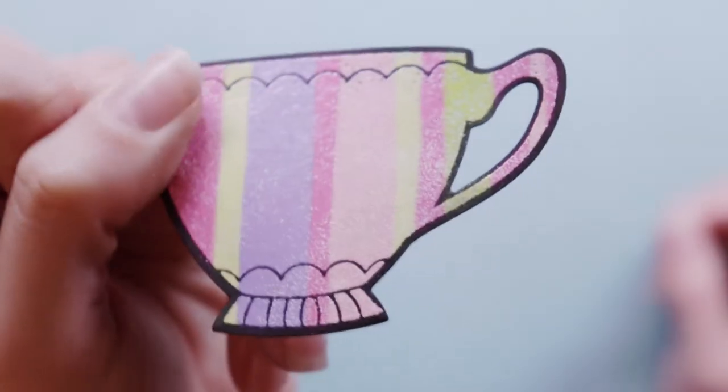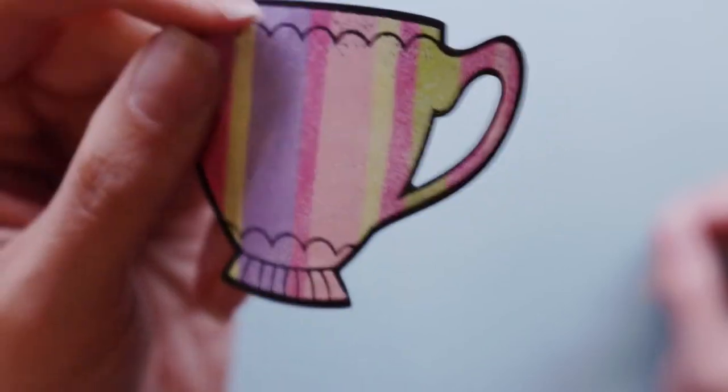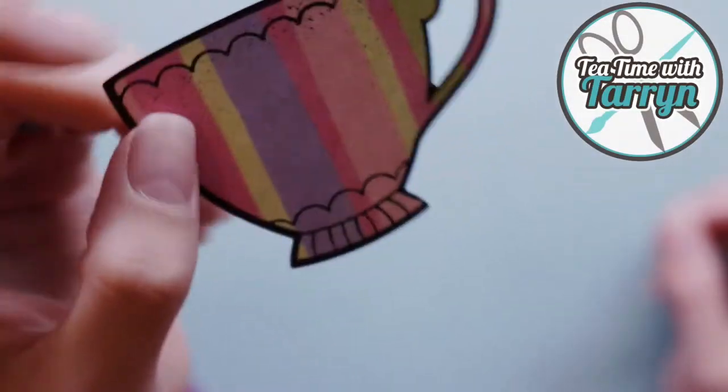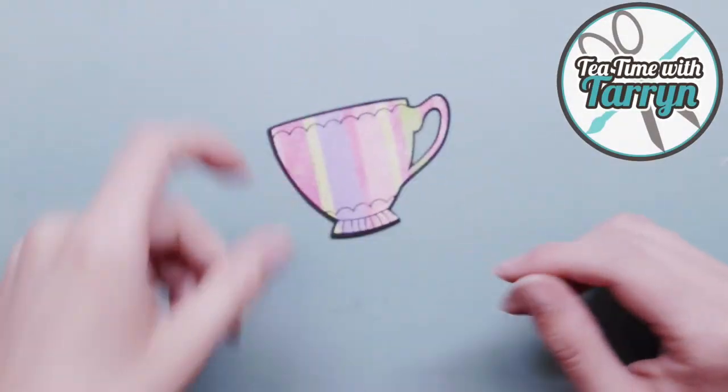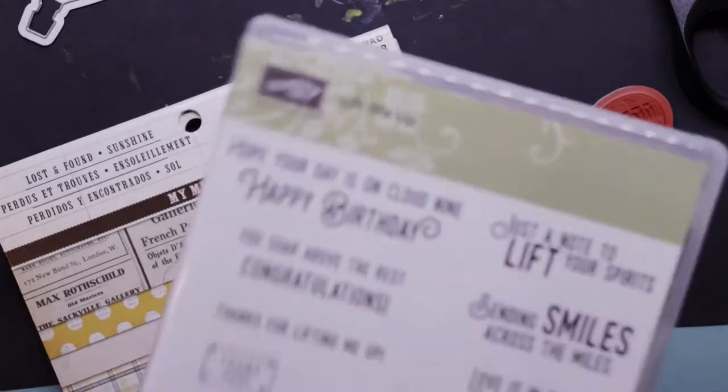In this episode of Tea Time with Taryn, I'm going to be showing you this technique that I've been doing lately where you clear emboss on patterned paper and it looks really cool.